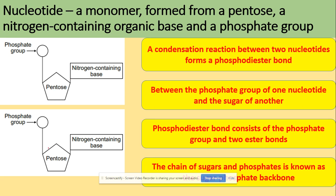The condensation reaction between these will form a phosphodiester bond. This bond will be present between the phosphate and the pentose. The phosphodiester bond consists of the phosphate group and two ester bonds, and the chain of sugars and phosphates is known as the sugar-phosphate backbone.